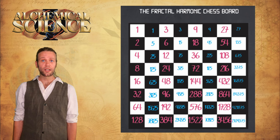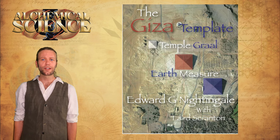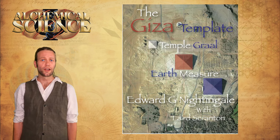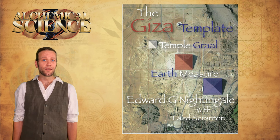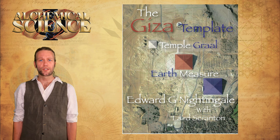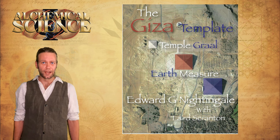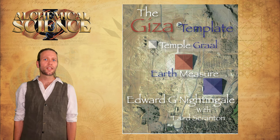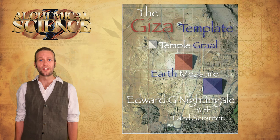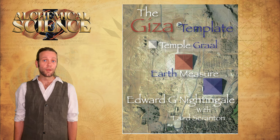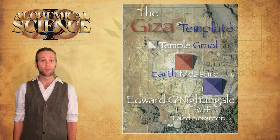After posting that video on the harmonic chessboard, I got an email from a researcher that I hadn't heard of before, Edward G. Nightingale. He told me that this doubling and tripling sequence that I'd found was actually Plato's lambda sequence, something that Ed has been studying himself for 25 years. Not only has Ed been studying this lambda sequence, but he'd been applying it too, quite prolifically.